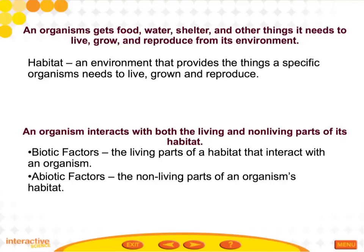So what does an organism get from its environment, from the area that's around it? It gets its food, its water, its shelter, and all the other things that it needs in order to live, grow, and reproduce. Those all come from the environment around the organism.